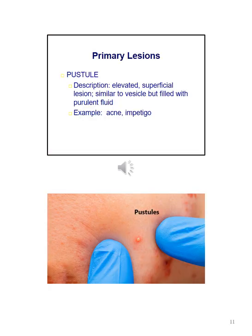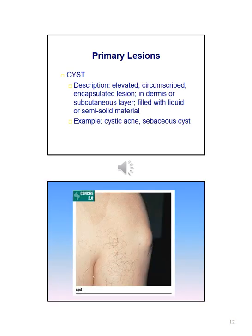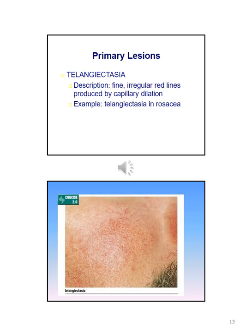A bulla is a vesicle that is more than one centimeter in diameter; an example is a blister. A pustule is elevated and a superficial lesion similar to a vesicle but filled with purulent fluid. Examples include acne and impetigo. A cyst is an elevated, circumscribed, encapsulated lesion in the dermis or subcutaneous layer filled with liquid or semi-solid material. Examples include cystic acne and sebaceous cysts. Telangiectasias are fine irregular red lines produced by capillary dilation.